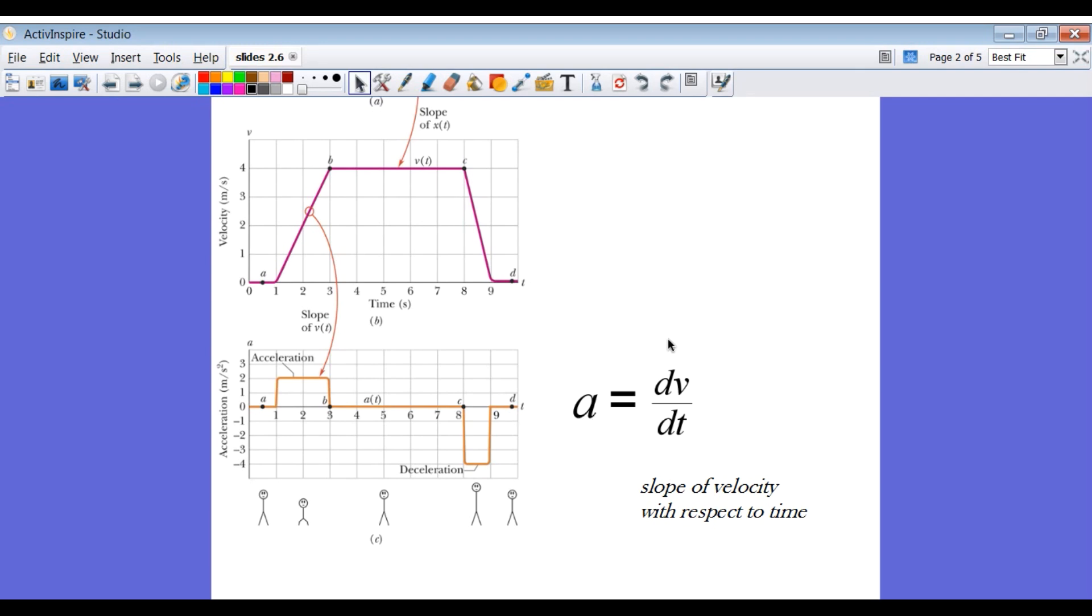So here is the equation. Acceleration is the derivative of velocity with respect to time. You have to make sure your velocity graph is plotted as a function of time if you want to take the derivative of it to get acceleration.